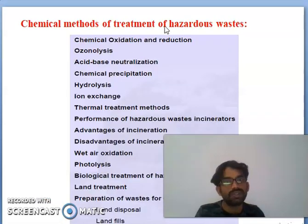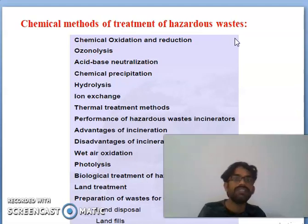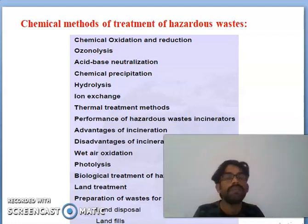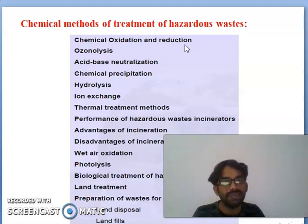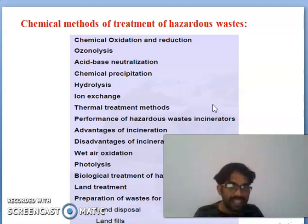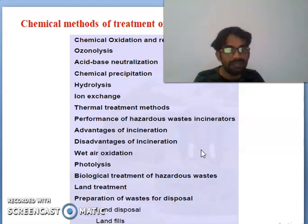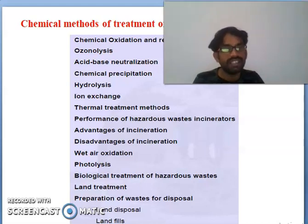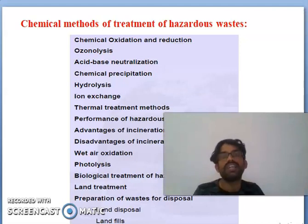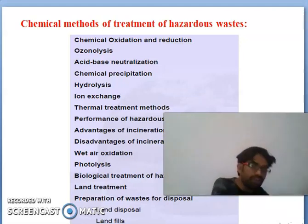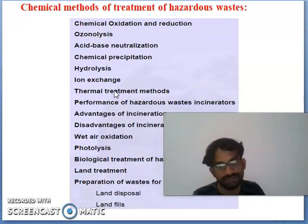Chemical methods to treat hazardous materials: how can we reduce or eliminate toxic chemicals from society? Methods include chemical oxidation and reduction, hydrolysis, acid-base neutralization, chemical precipitation, ion exchange, thermal treatment, wet air oxidation, photolysis, biological treatment, land treatment, and land disposal or landfilling. These chemical and biological methods can be used to remove toxic waste materials from our environment.